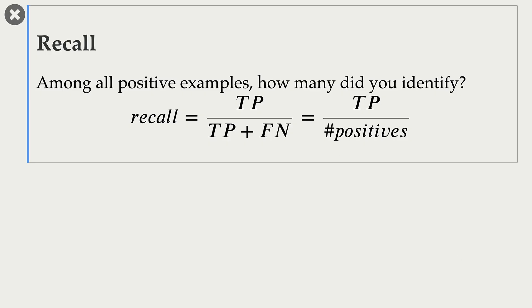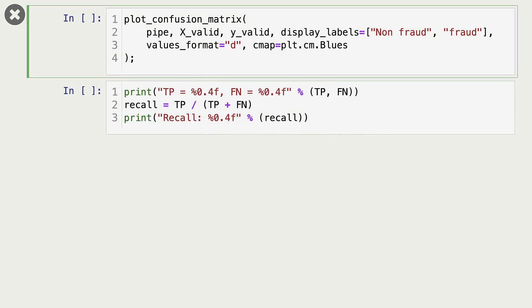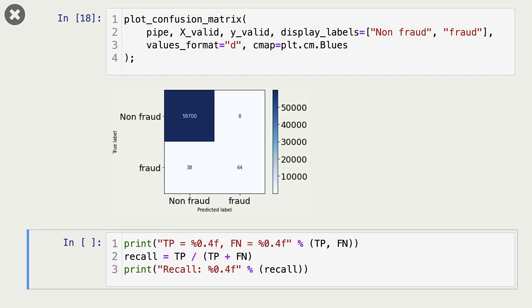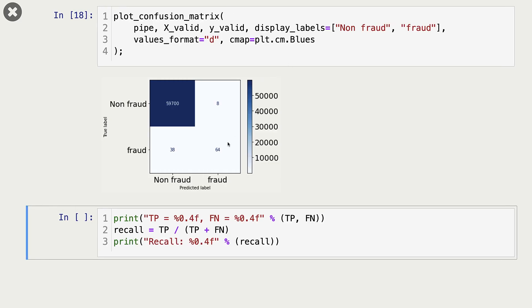So let's try to calculate recall. This is our confusion matrix, and we have 64 true positives, because we are considering fraud as our positive class. And we have 38 false negatives, the examples that were missed by our logistic regression model. So our recall is going to be 0.62.